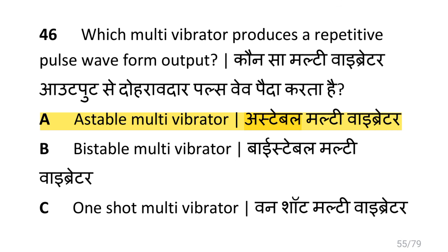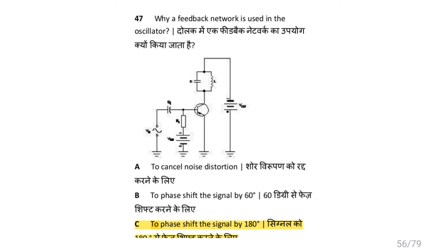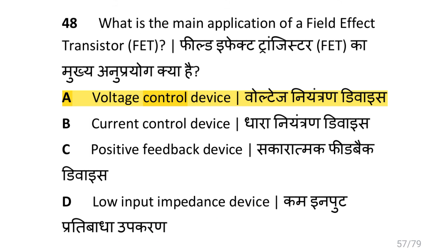Which multivibrator produces a repetitive pulse wave at the output? i.e. astable multivibrator. Why is a feedback network used in the oscillator? i.e. to phase-shift the signal by 180 degrees.